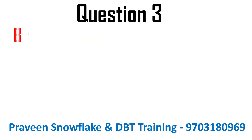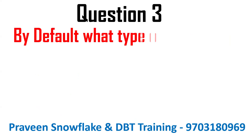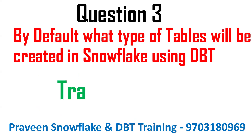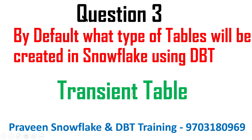The next question — and this is important — is: by default, what type of table will be created in Snowflake using DBT? In Snowflake, we have permanent tables, transient tables, and temporary tables. Whenever you create any table using the DBT materialization, by default a transient table will be created in the Snowflake database.